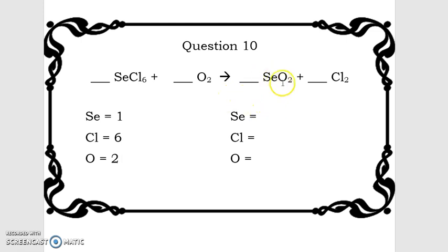Looking at the product side, we have one atom of selenium, we have two atoms of oxygen, so down here next to oxygen we're going to write two. And for chlorine, we have two atoms of chlorine. One and one is even for selenium, so that's balanced.